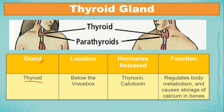Next, we have the thyroid gland, located below the voice box. It releases hormones such as thyroxine and calcitonin. Thyroxine, also known as T4, is located in all tissues and increases the metabolic rate, which regulates growth and development. Calcitonin is located in the bones, kidneys, and intestine, and inhibits the release of calcium from the bones, or causes the storage of calcium in the bones.